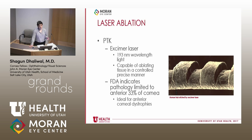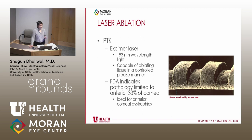Moving into laser ablation — with the advent of the excimer laser in the 1980s and 1990s, this has become the most popular treatment option. The excimer laser uses 193-nanometer wavelength light and is capable of ablating tissue in a very controlled and precise manner. That ability to precisely titrate the laser is what makes it perfect for anterior corneal dystrophies. The picture shown is a human hair that has been etched by the excimer laser to illustrate its precision.